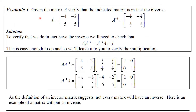Here's an example where we verify that the indicated matrix A⁻¹ is indeed an inverse of A. All we need to do is multiply the two matrices together on both sides, as the definition requires. A times A⁻¹ gives the identity, and A⁻¹ times A also gives the identity. You should be checking these calculations. As the definition suggests, not every matrix will have an inverse.